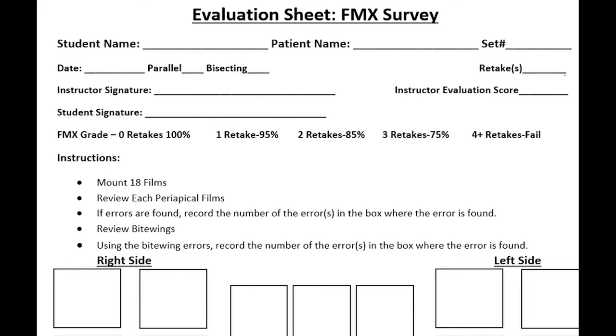When it comes to grading your FMX, we have a standard sheet that we're going to be using. We can see the evaluation or how we are going to assess you. If you have zero retakes, you did a perfect FMX with no issues needing a retake, then we can give you 100.